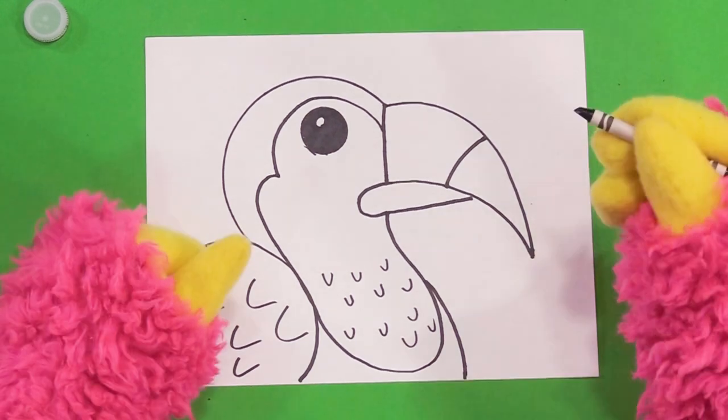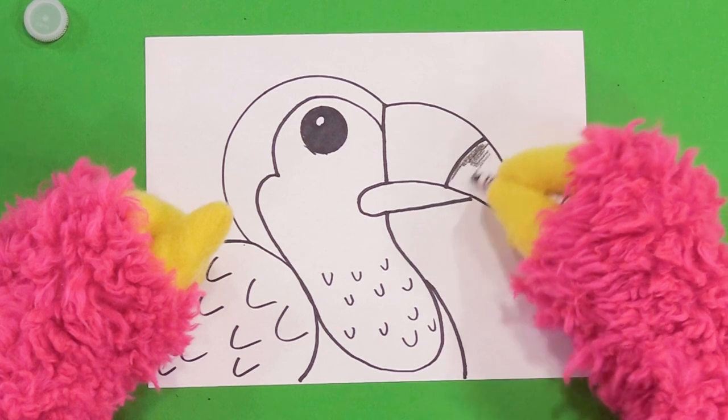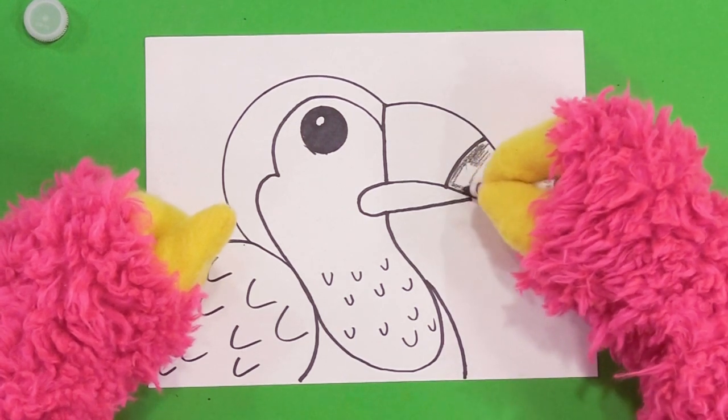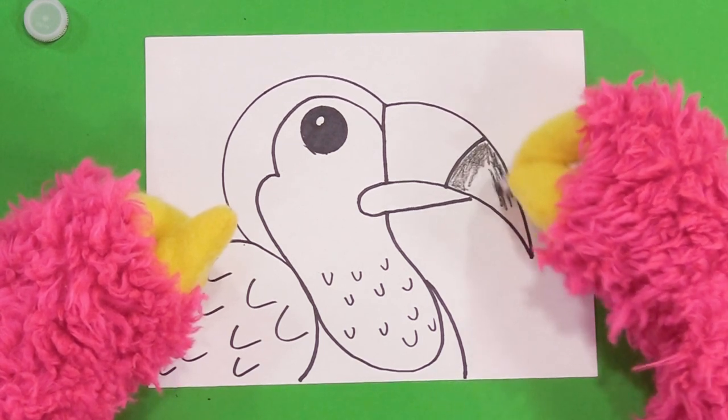Just to make it easier to see, I'm going to color in some of this toucan. I'm going to do the tip of the beak black, because that's kind of how a real toucan looks. And I'm going to try really hard to stay inside of the lines.